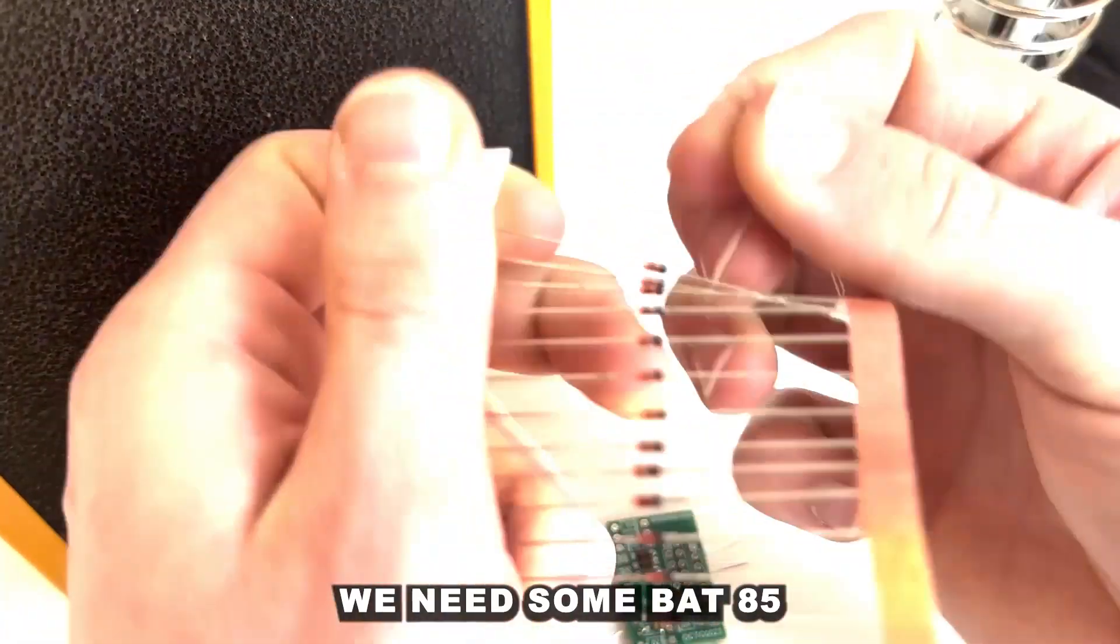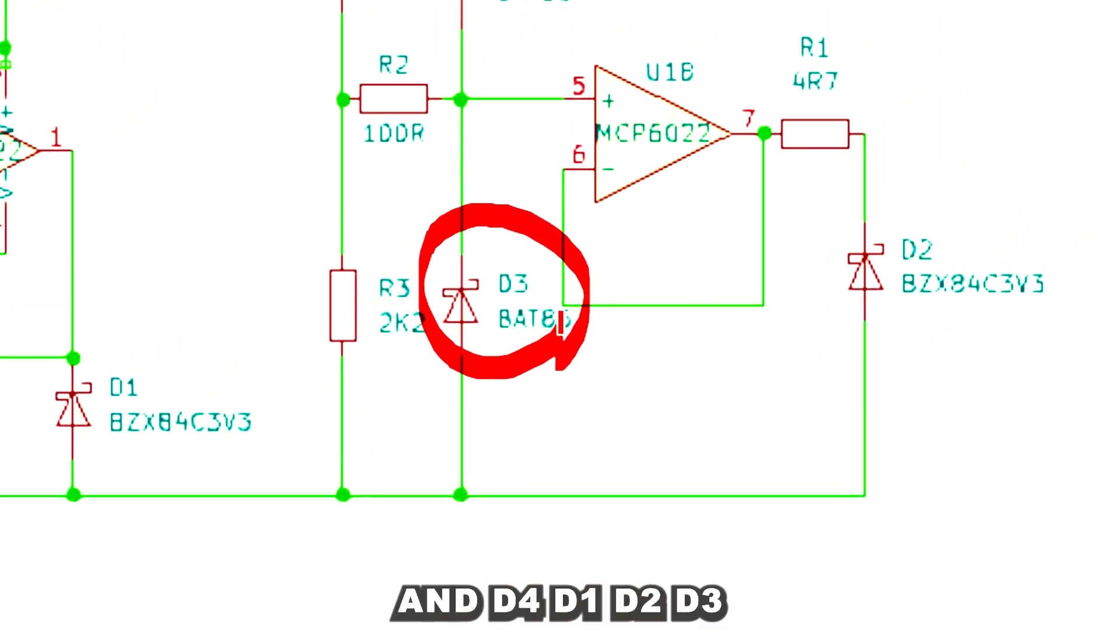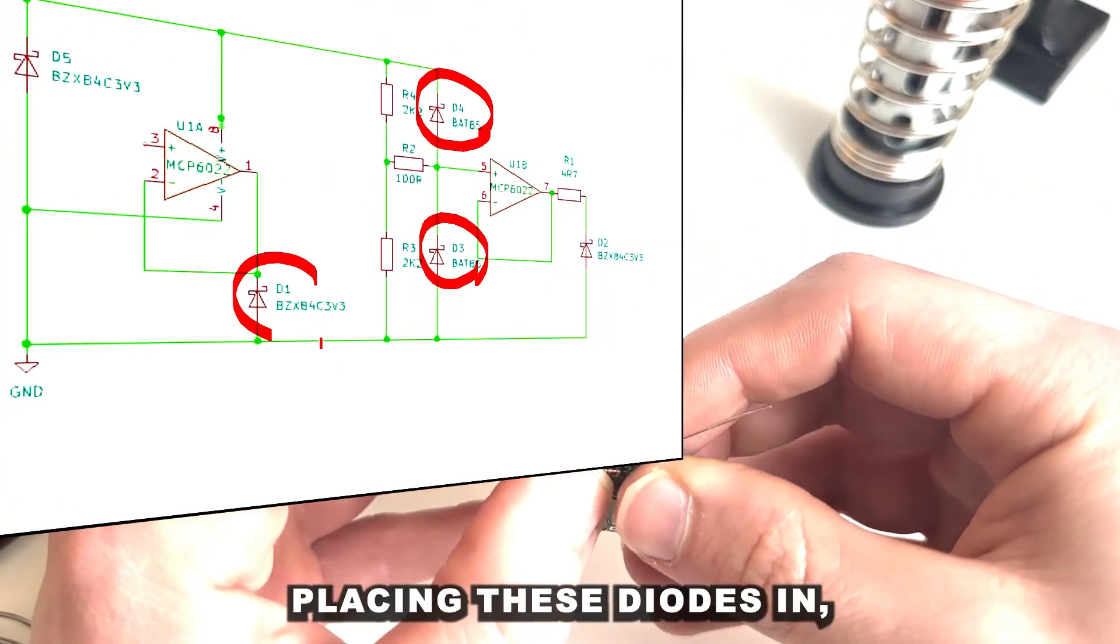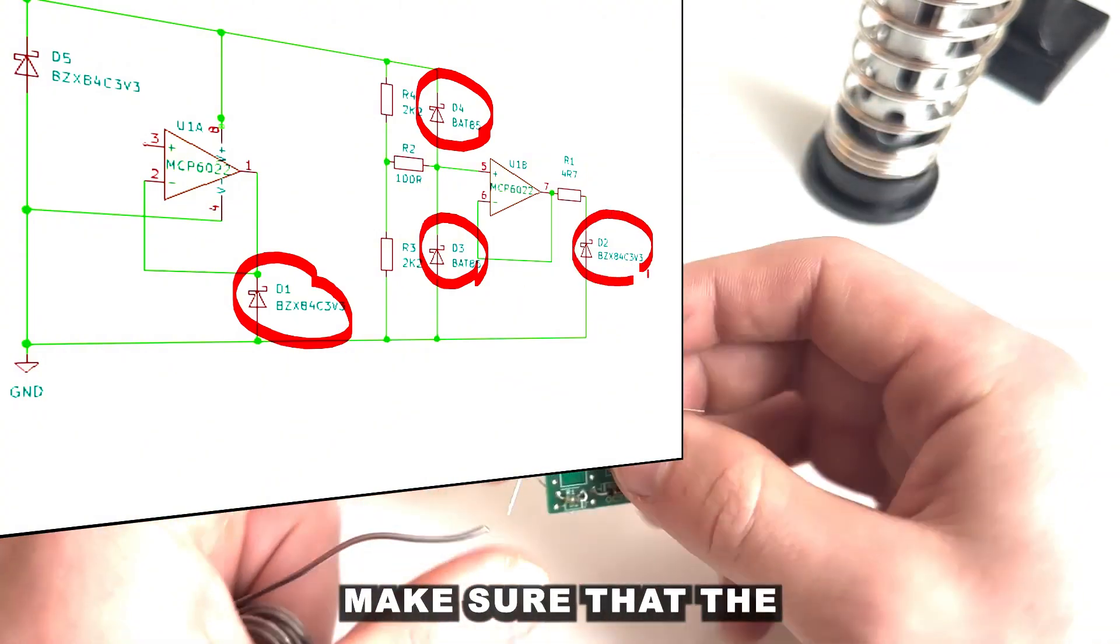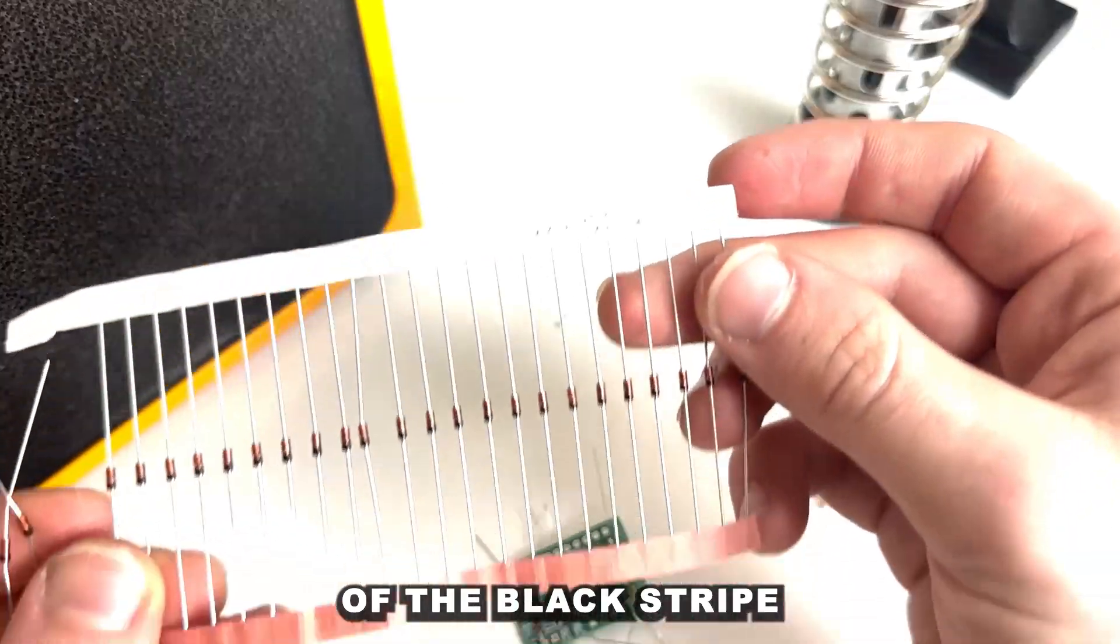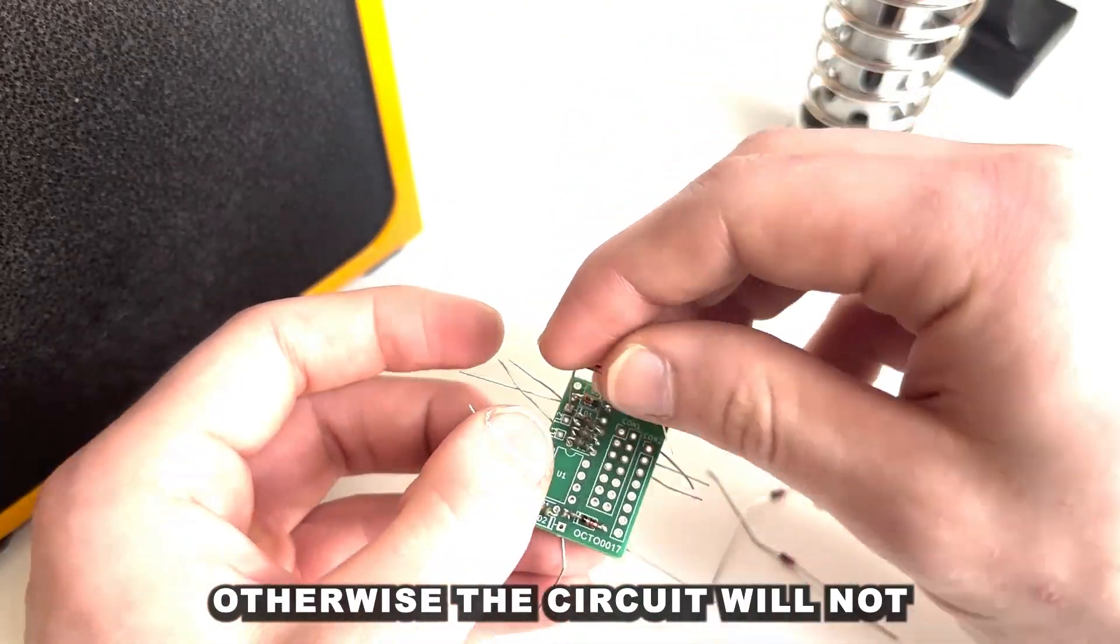Looking at the drawing here we need some BAT85s as D3 and D4, D1, D2 and D3. We need the other type of diode which is the 3V diode. Placing these diodes in, make sure that the polarity is correct so match up the black stripe with the black-white stripe on the circuit board. Essential otherwise the circuit will not work.